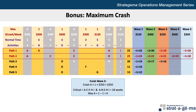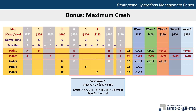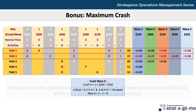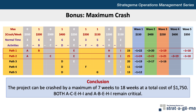Can we continue? Well, let's look at this very closely. We could crash activity B by one week, but that would only reduce the time on path 1 to 17 weeks, while path 2 would still be critical at 18 weeks, so we'd be wasting our money. As for paths 3, 4, and 5, they're all still below 18 weeks, so crashing activities there would not reduce the total project time. Therefore, the project can be crashed by a maximum of 7 weeks to 18 weeks at a total cost of $1,750, and both paths A-C-E-H-I and A-B-E-H-I remain critical.